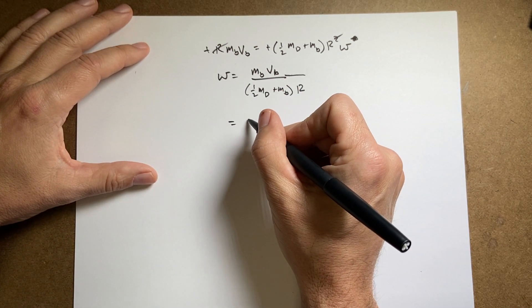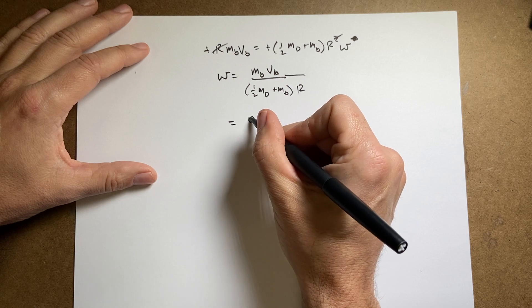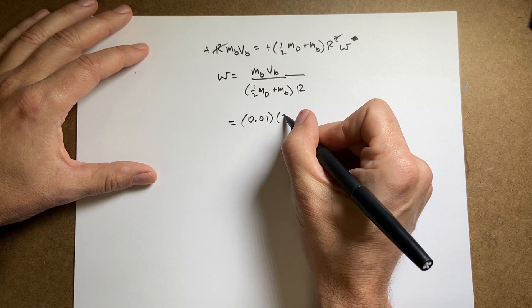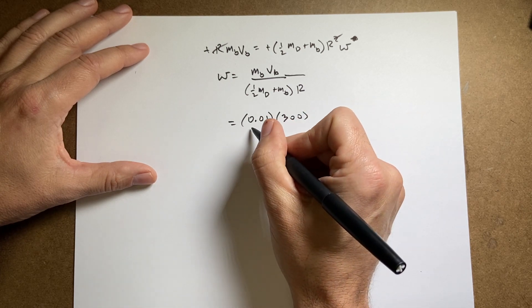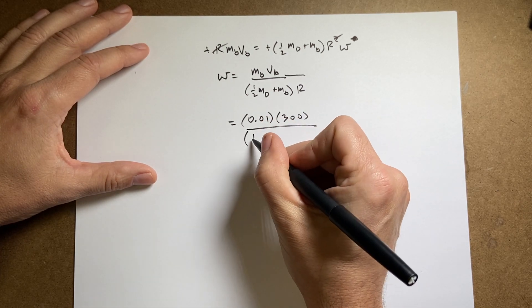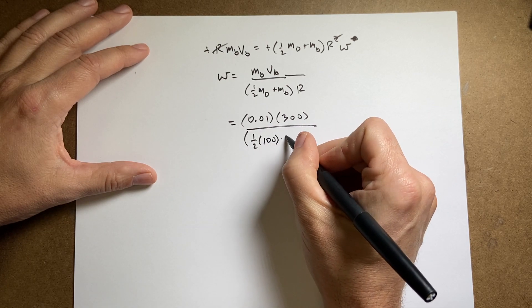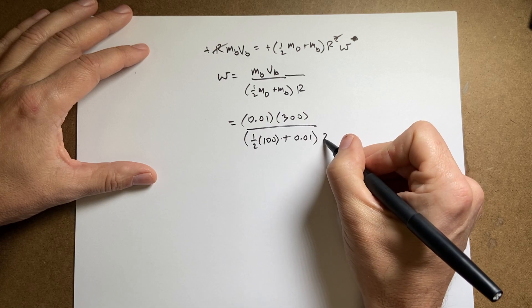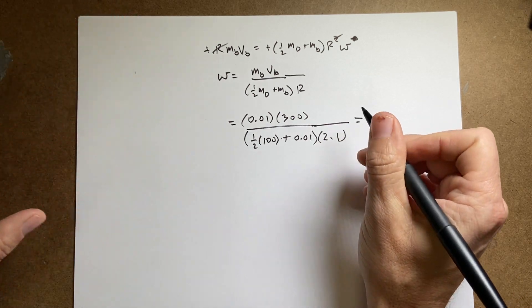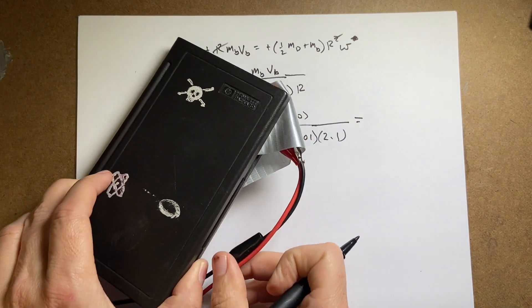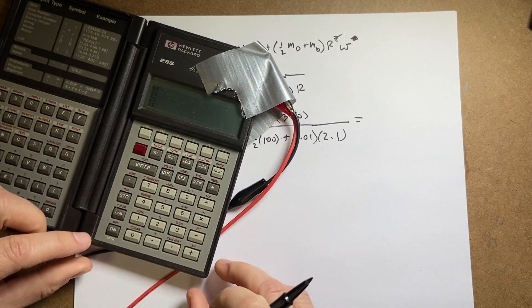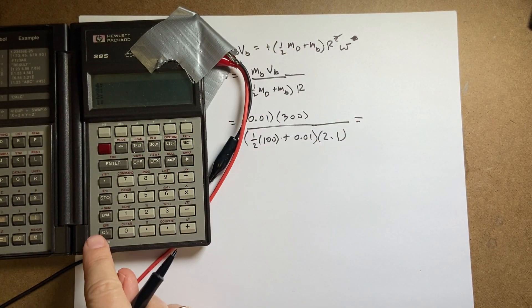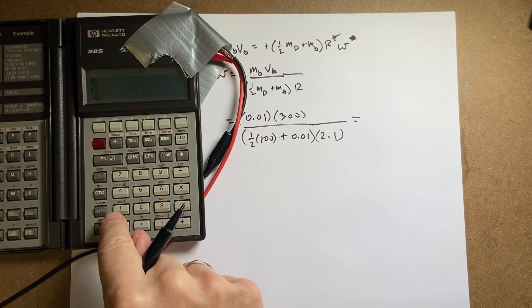So let's put in our values. I get mass of the bullet, which was 0.01 kilograms, velocity of the bullet was 300. I'm leaving off the units because I'm lazy. One half times 100 plus 0.01 times the radius of 2.1. And I get, using my calculator, an RPN calculator that I had to hack for the power supply.